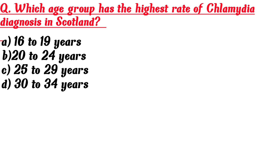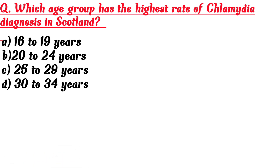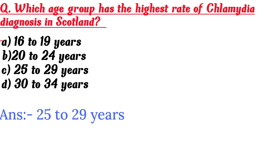Which age group has the highest rate of Chlamydia diagnosis in Scotland? A. 16-19 years, B. 20-24 years, C. 25-29 years, D. 30-34 years. Answer is 25-29 years.